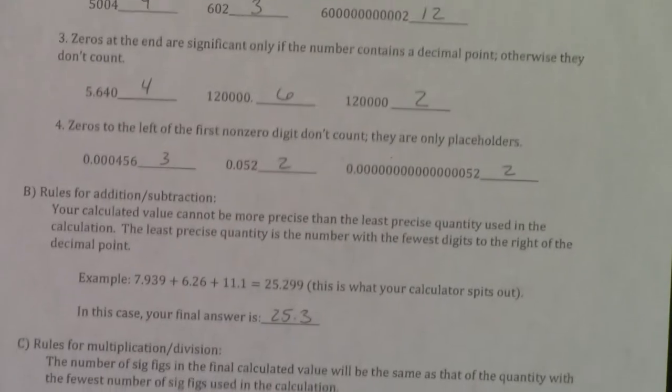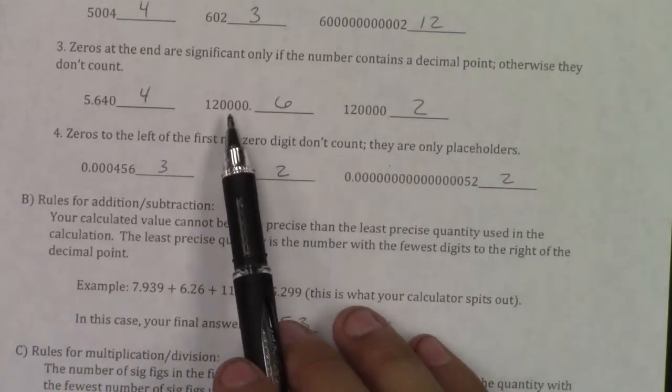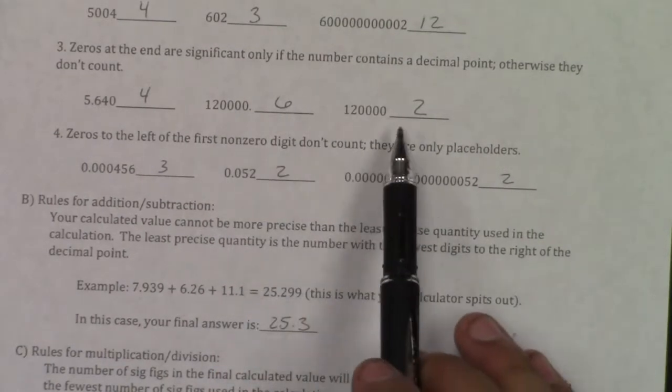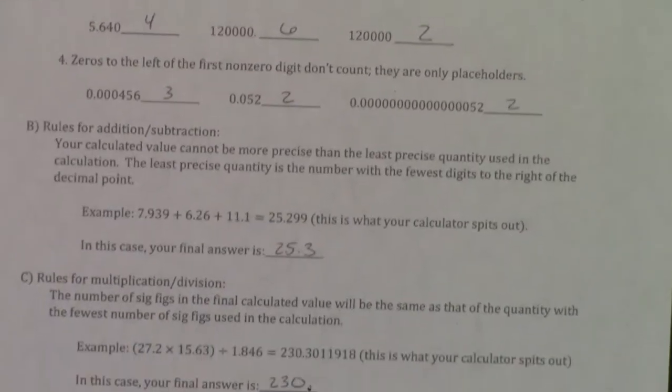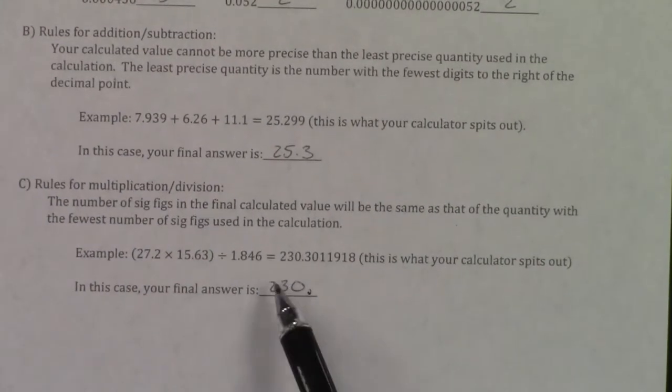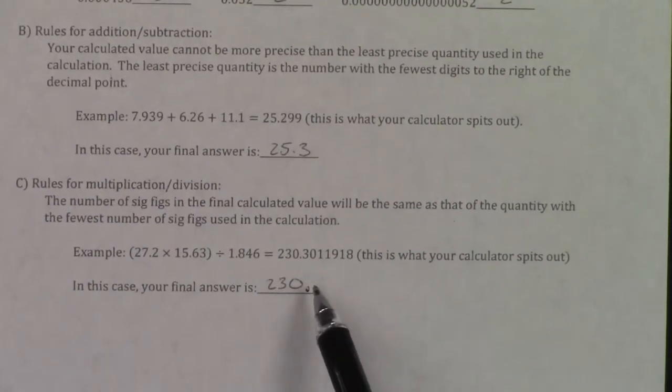Because remember up here, if it has a decimal, you count the 0 to the right. But if there is no decimal, you don't. So since I need 3 sig figs, that's why I got it to go 230, and then with the decimal.